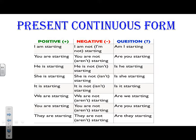The negative form: I use not after the verb to be. So: I am not, you are not, he is not, she is not starting. You can write are not or the short form aren't. Is not or the short form isn't is also fine, and am not as well. For the question, I start the sentence with is or are plus subject plus verb ING. For example: are you starting? is he starting? is she starting? are you starting?